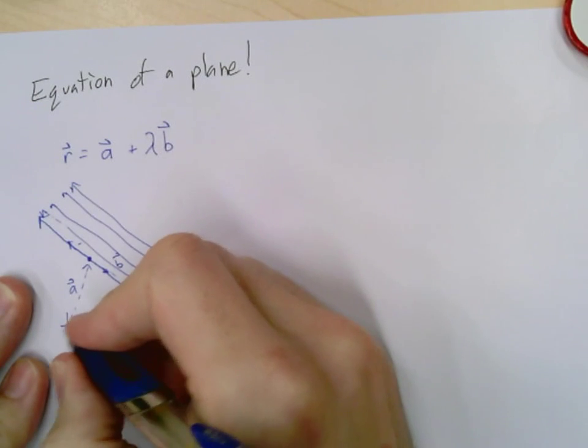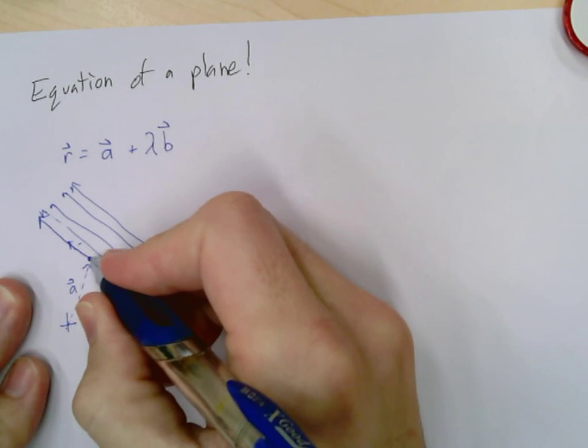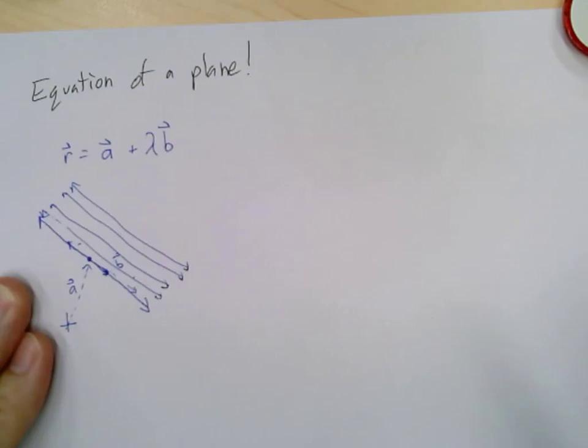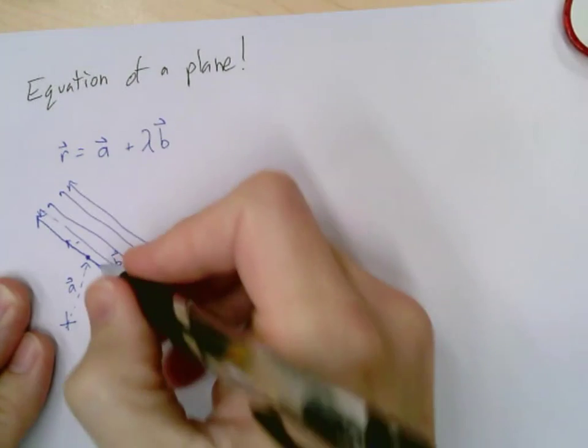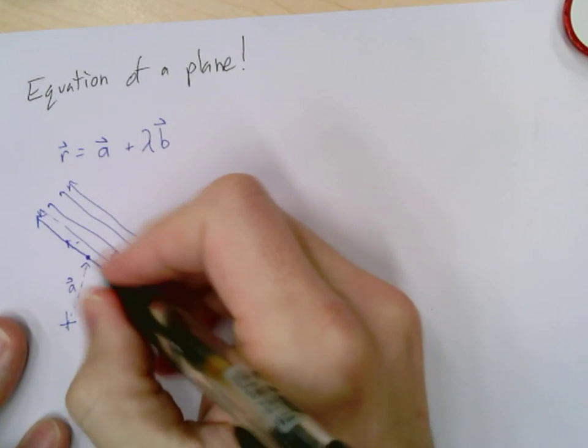I can go from my origin to a to get a point. I can then go in the B direction to create a line.